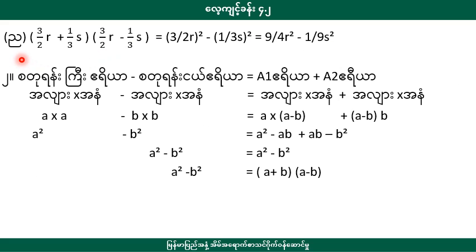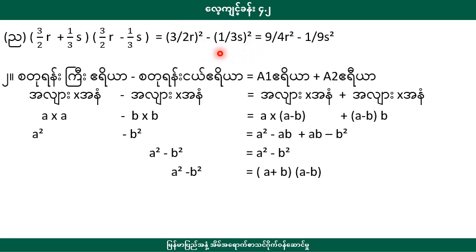3.2r plus 1.3s into 3.2r minus 1.3s. This gives us 3.2r whole squared minus 1.3s whole squared, equal to 9/4 r squared minus 1/9 s squared.